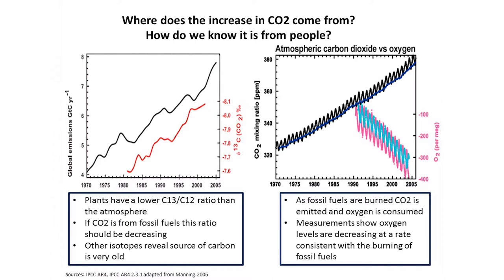If you look at atmospheric carbon dioxide versus oxygen, from 1970 to about 2005, when one burns fossil fuels you react hydrocarbons with oxygen — you release CO2 and the oxygen levels in the atmosphere go down. They're not going down very much, but the decrease in oxygen is measurable. Sure enough, oxygen has been decreasing as CO2 has been increasing, suggesting again this must be the combustion of fossil fuels, and the levels of oxygen decrease are consistent with burning hydrocarbons.